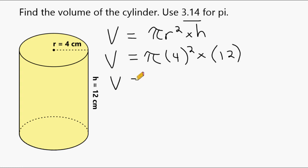So what I'm going to do next is take this radius of 4 and square it, which is 16. So I'm going to change this to 16 pi. And then I'm going to multiply that by 12. And then what we're going to do is multiply 12 by 16, which is 192.